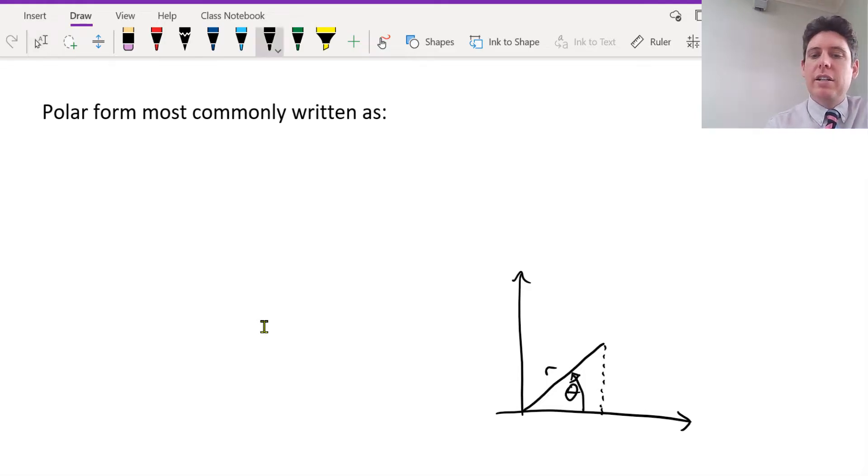Okay, so if we consider the Argand diagram, complex diagram, imaginary and real axes. And as we go round, it forms what shape? A circle.